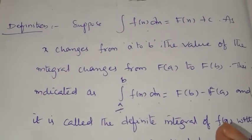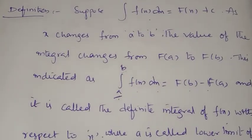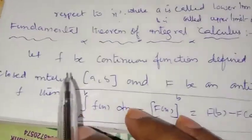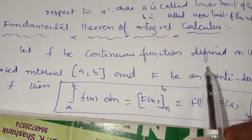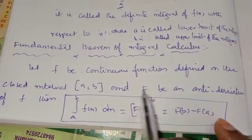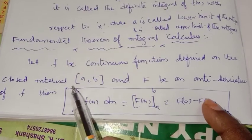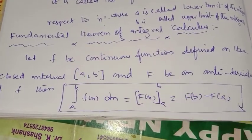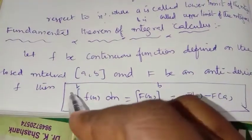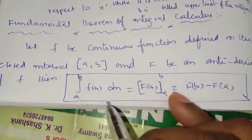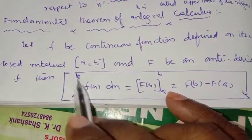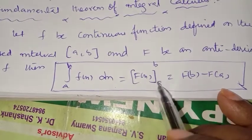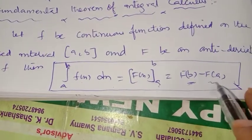Here we have one important theorem: the Fundamental Theorem of Integral Calculus. Let f be a continuous function defined on the closed interval [a, b] and F be an anti-derivative of f. Then ∫ from a to b of f(x)dx equals F(b) minus F(a).